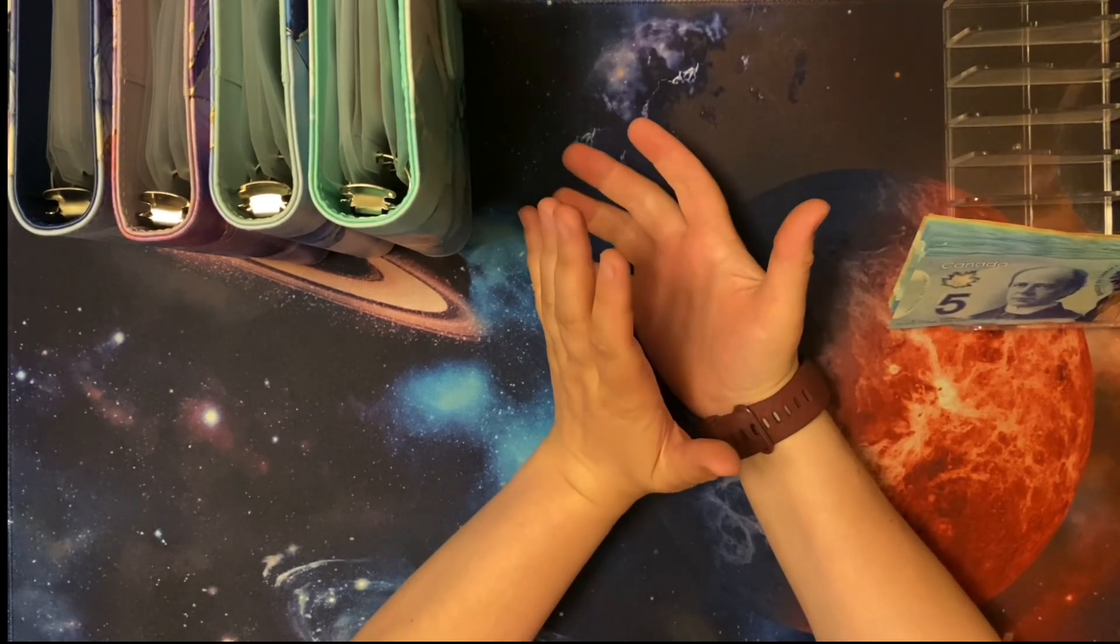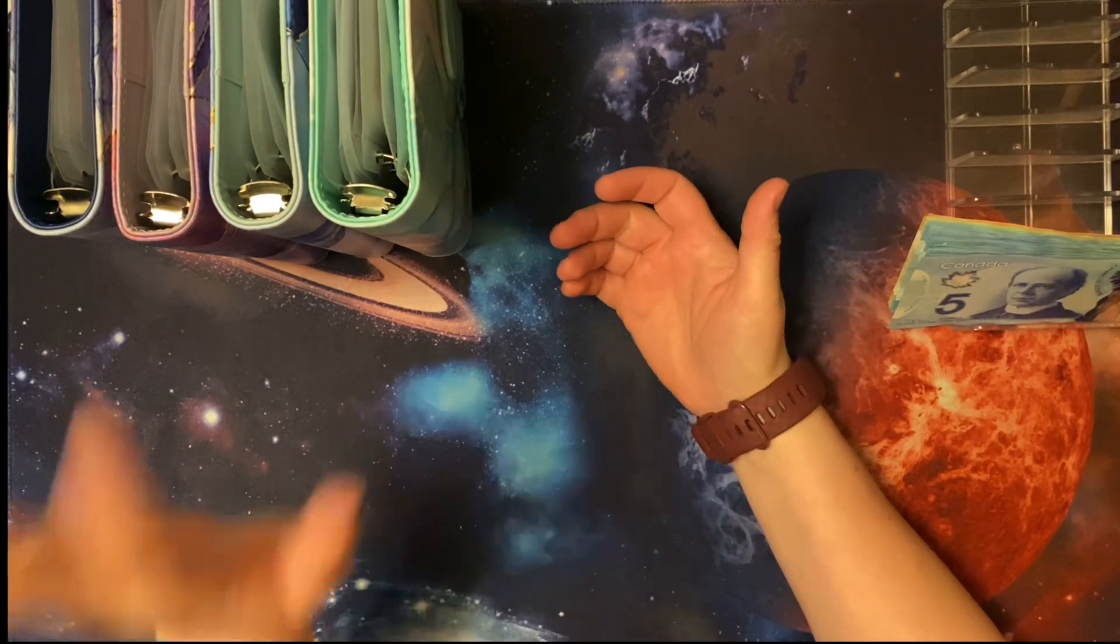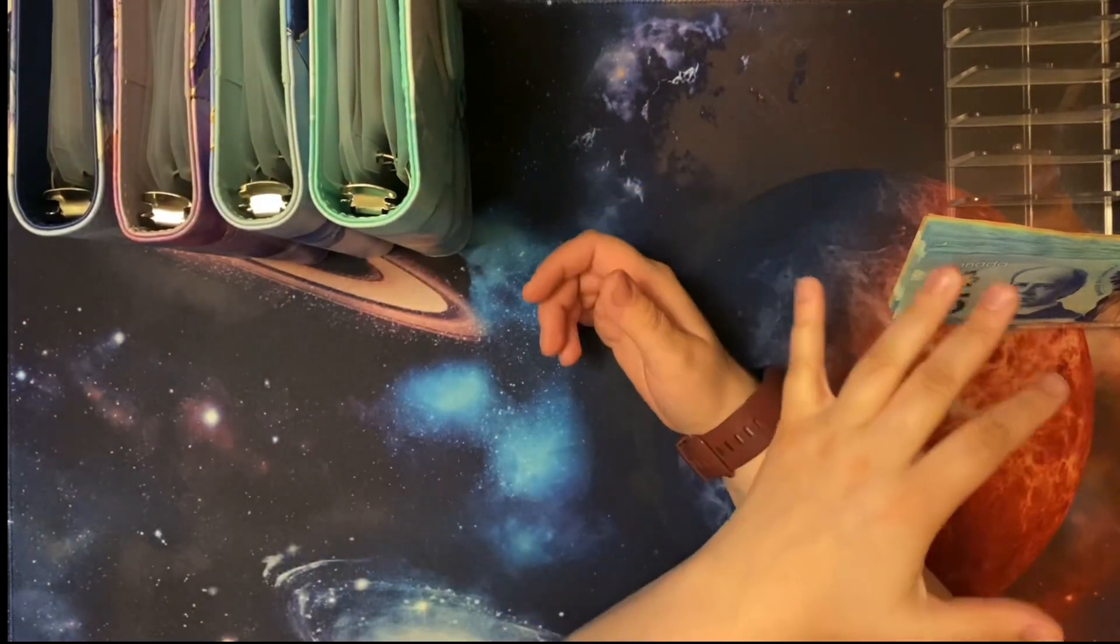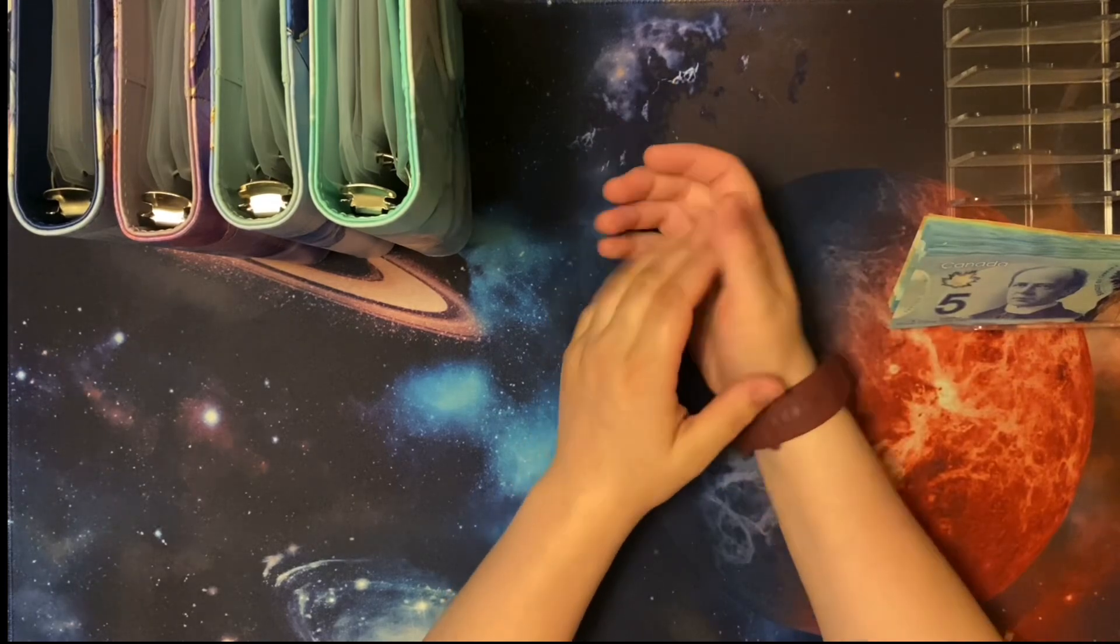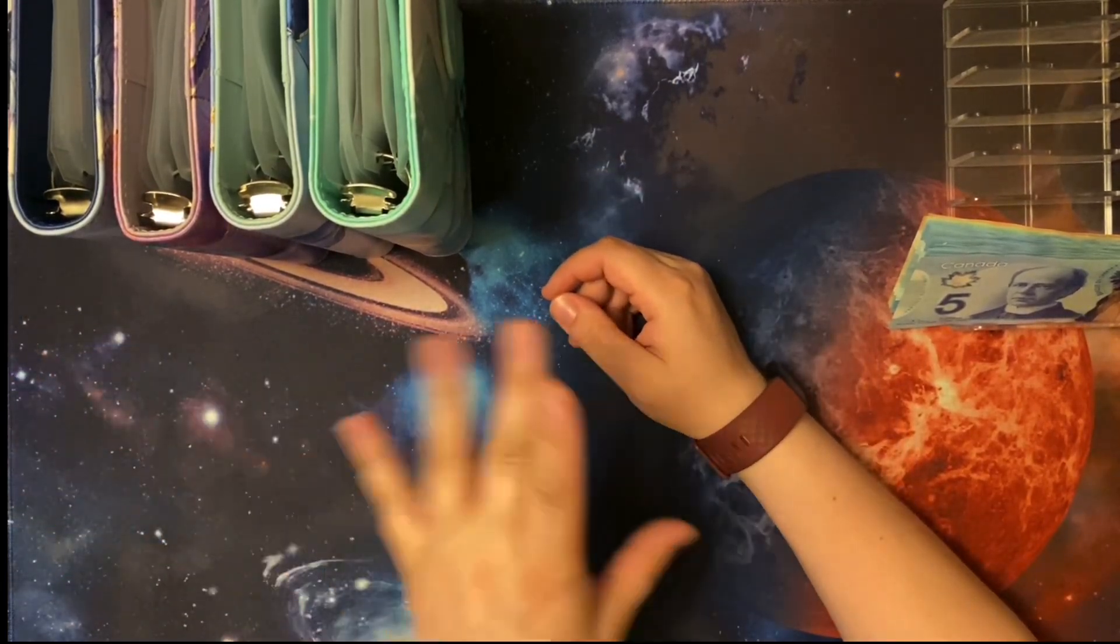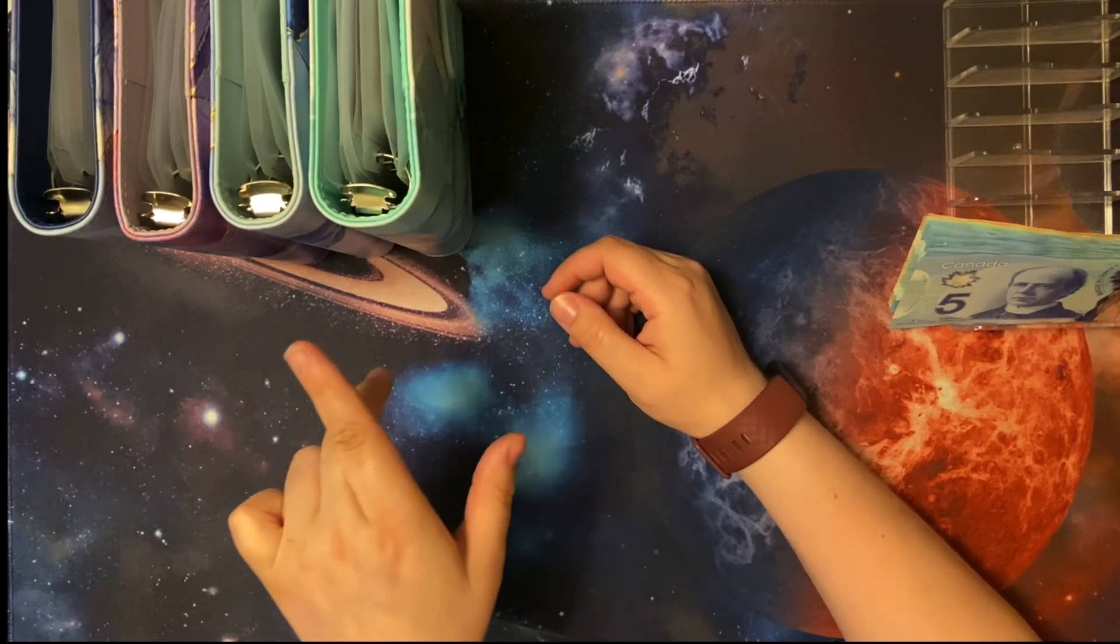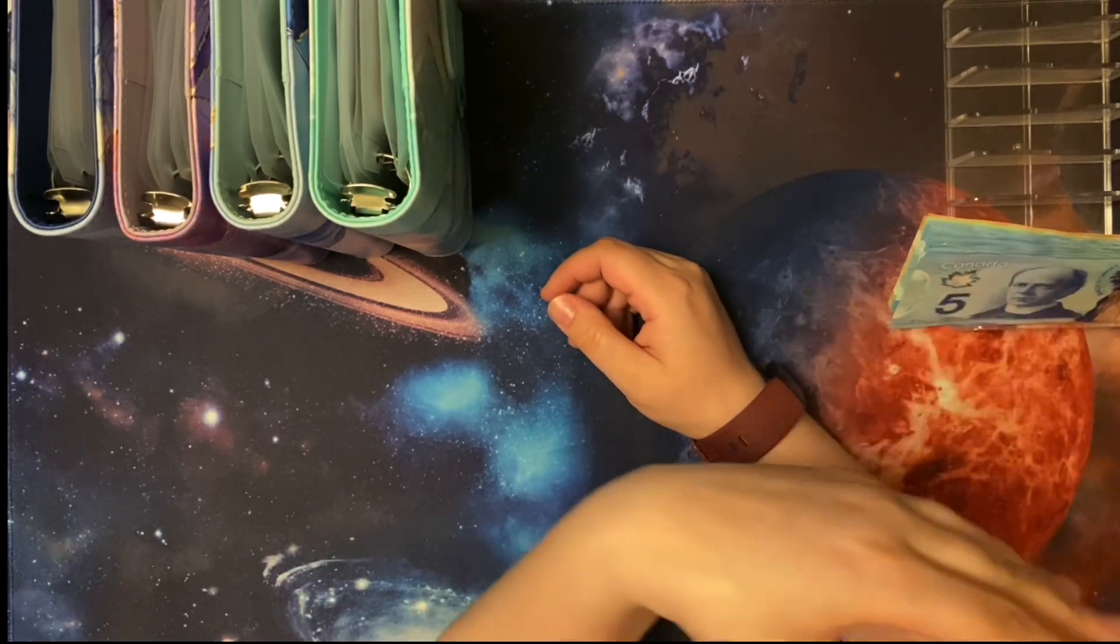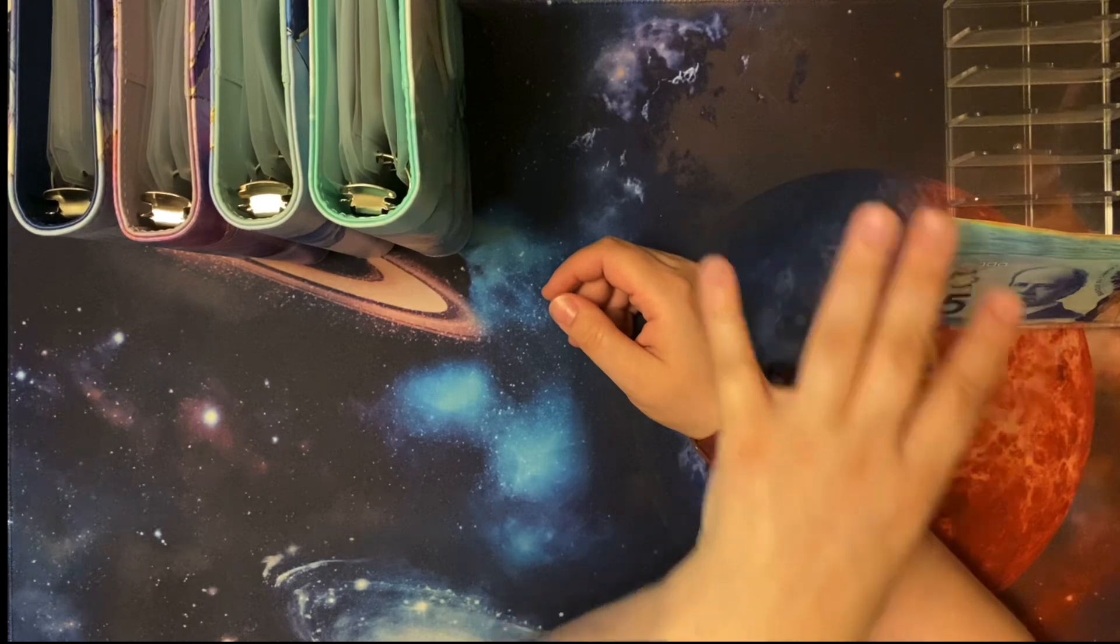So today I'm going to be cash stuffing my binders. I'll be doing my variable expenses, which are the expenses that change from week to week. I do also have a little bit that I want to stuff into a couple other envelopes, and I will have some money left over because I'll be filming my Monday Mini Madness as well.